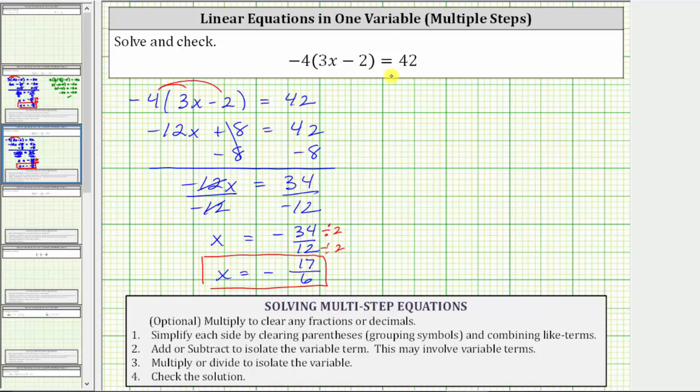Forming the substitution gives us negative four times the quantity three times negative 17 sixths minus two equals 42. And now we simplify the left side of the equation following the order of operations. We determine this product first. Before multiplying, we simplify. There's one three in three and two threes in six. This gives us negative four times the quantity, this is now just negative 17 halves minus two equals 42.